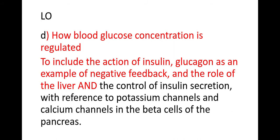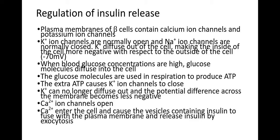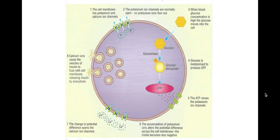This process is quite complex, so here is a diagram to break it down. Normally within the beta cell, potassium channels and calcium channels are open, allowing potassium ions to flow through. When blood glucose concentration is high, glucose moves into the cell via facilitated diffusion, and as it is metabolised it produces ATP. This ATP closes the potassium channels.